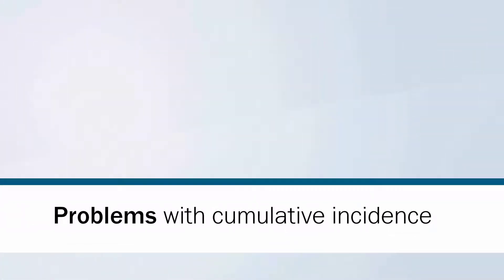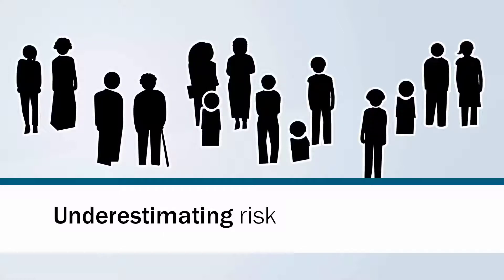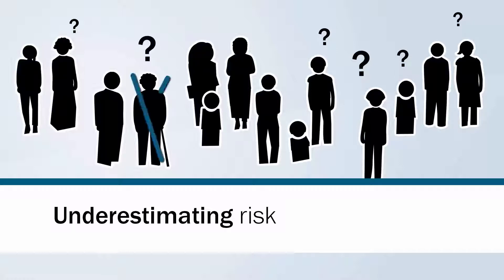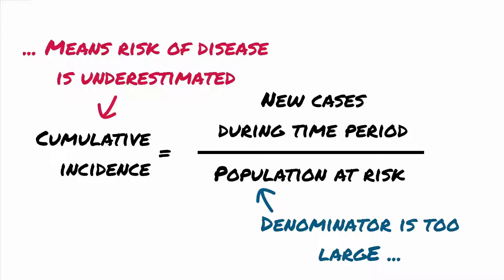There are a couple of problems with using cumulative incidence to measure risk. One issue is underestimating risk. In real life it is not always possible to count the population at risk accurately. Usually, people who are not actually at risk of disease are mistakenly counted as being at risk, making the denominator larger than it should be, which in turn means the risk of disease will be underestimated. This problem has a smaller effect when dealing with a rare disease such as corneal dystrophies in a large population such as the whole country or the capital city.